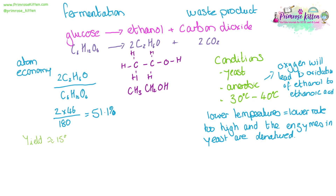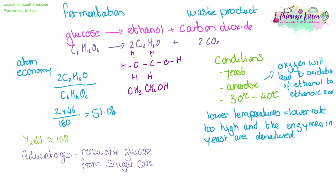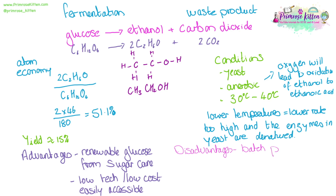The yield for this reaction is around 15%, depending on the exact conditions. The advantages are that it is renewable — glucose is a renewable resource that can be grown again; it comes from sugarcane. This is a pretty low-tech, low start-up cost reaction, and it is easily accessible to communities in low socioeconomic countries. The disadvantages are that it is a batch process — you do one lot, stop it, and start afresh. It is very labour intensive.